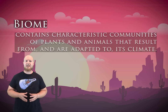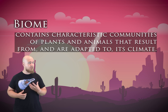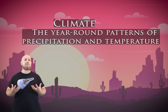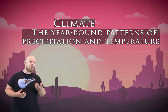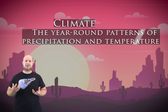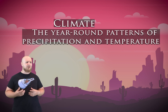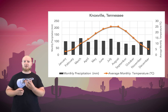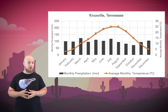A biome contains characteristic communities of plants and animals that result from and are adapted to a particular climate. Climate is one of the abiotic components of an ecosystem, and it refers to the pattern of rainfall and temperature in an area, commonly represented using a climatogram. In these diagrams, temperature is typically represented by a line and precipitation as bars.